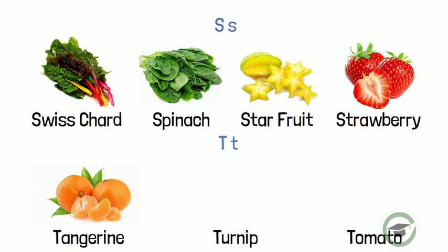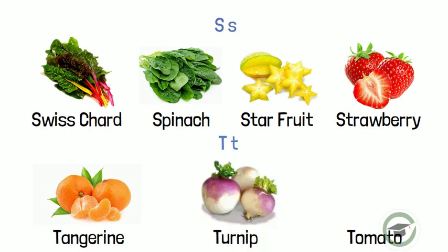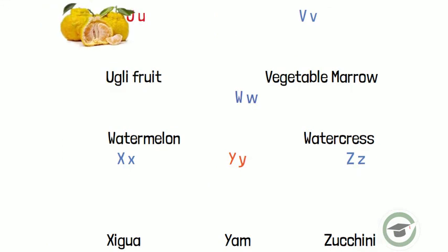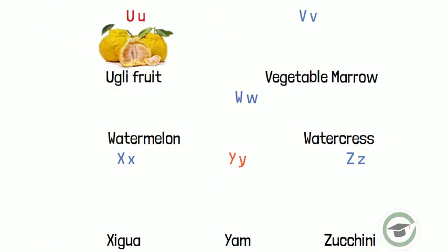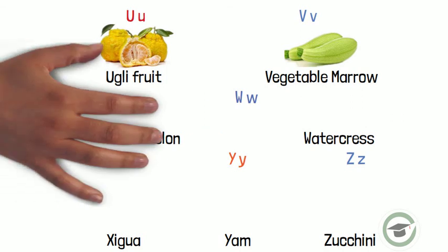Tangerine. Tangerine. Turnip. Turnip. Tomato. Tomato. Ugly fruit. Ugly fruit. Vegetable morrow. Vegetable morrow.